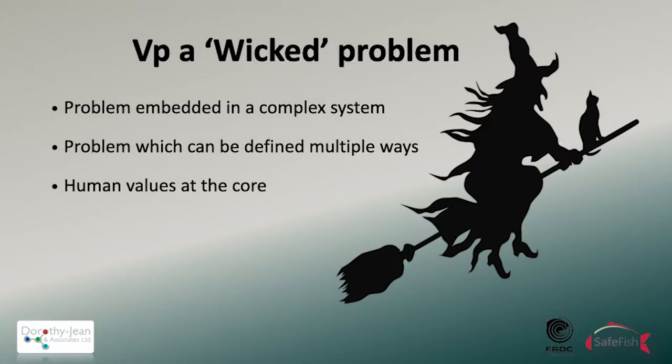Thank you very much, Ali, for that introduction. I'm not going to go over all that we talked about in the last two sessions, but suffice to say that by now you will appreciate Vibrio parahaemolyticus is a wicked problem. It's an environmental problem with knowledge gaps and food safety risks along the food chain. Environmental science actually defines a wicked problem as something embedded in a complicated system — Vibrios are both in the marine world and they affect us on land.